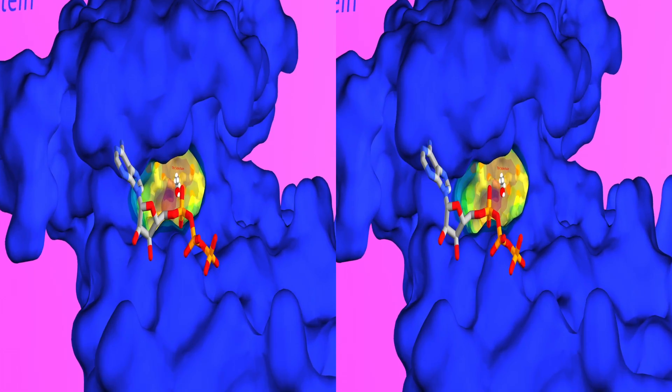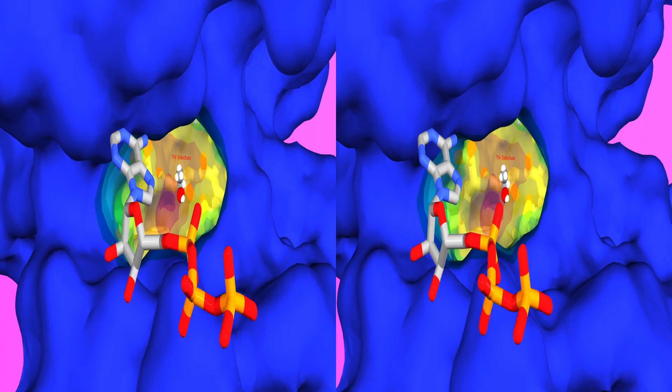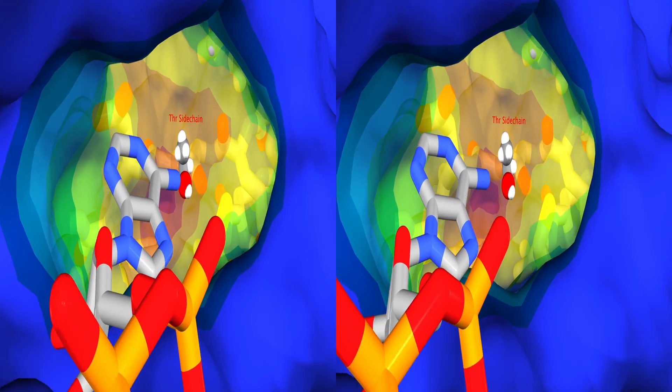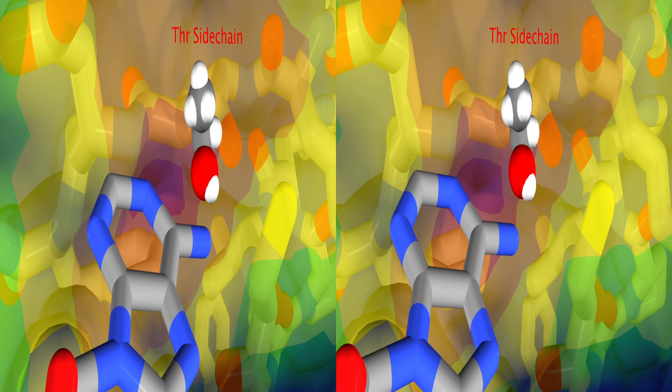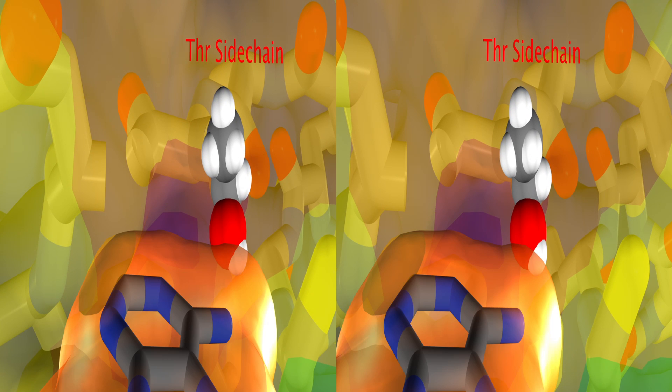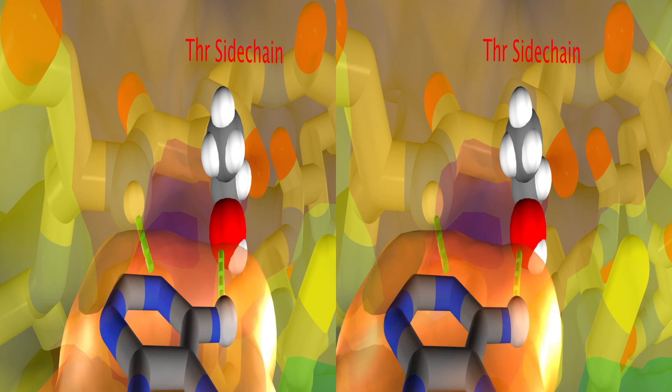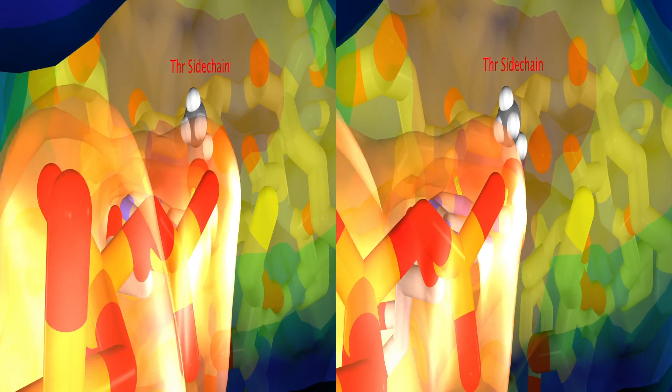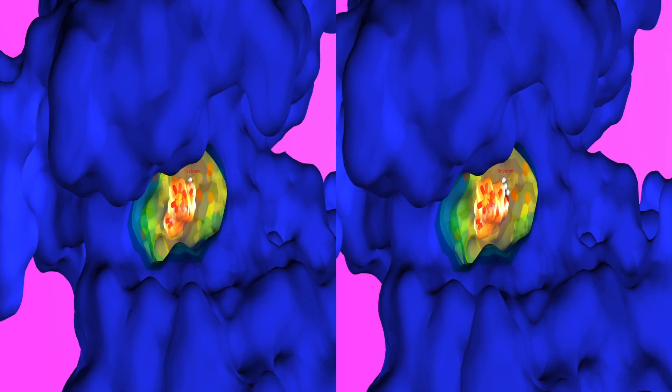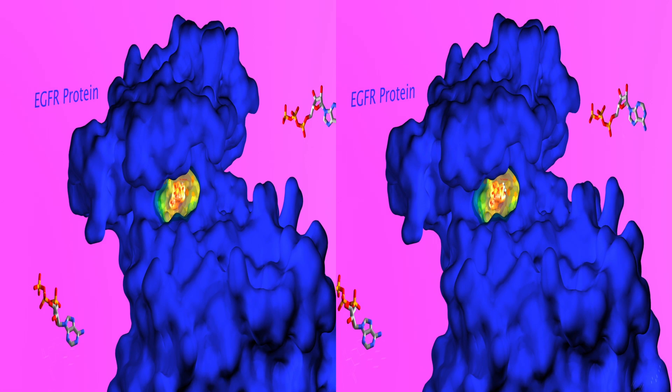ATP binds in the ATP binding site of the tyrosine kinase domain and makes two important hydrogen bonds to the protein. A threonine side chain at position 790 is present in the binding interaction. The binding of ATP to the tyrosine kinase domain of the protein leads to phosphorylation of the tyrosine residue and as a result, proliferation of cells.